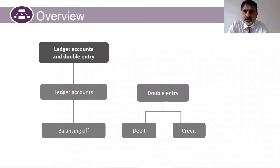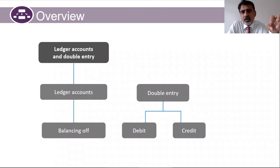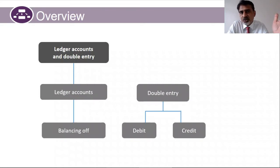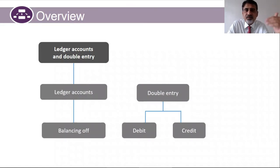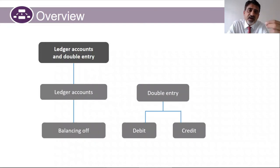Once your trial balance is ready and corrected, you move on to your income statement and then make the balance sheet. This is the complete accounting cycle: financial transaction → journal → ledger → closing the ledger → trial balance → income statement → balance sheet. This is what we're going to learn in chapters five and six.